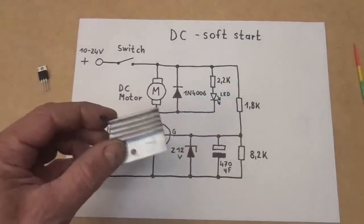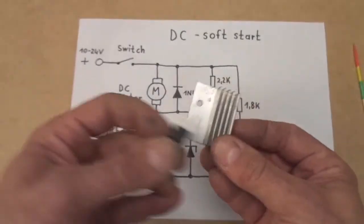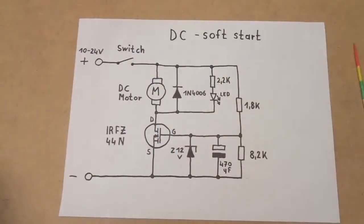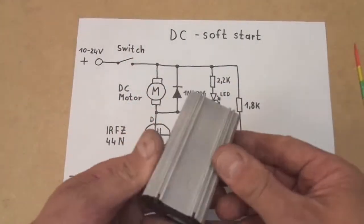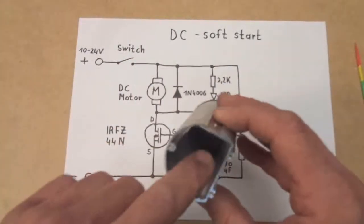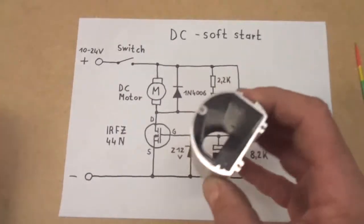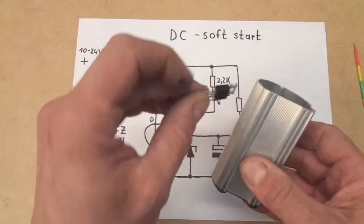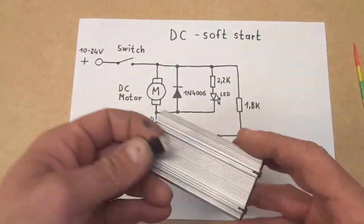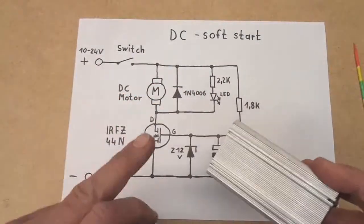And I would recommend to use a heat sink minimum this size or even bigger. You could use an enclosure like this, put your complete circuit board in there and use this to cool the MOSFET. Cooling very important for this circuit.